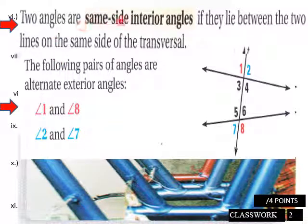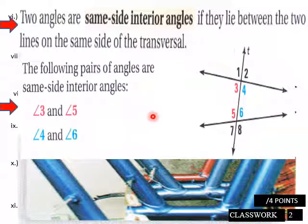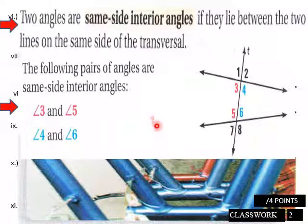Two angles are same side interior angles if they lie between the two lines on the same side of the transversal. The following pairs are same side interiors: angles 3 and 5, and angles 4 and 6.